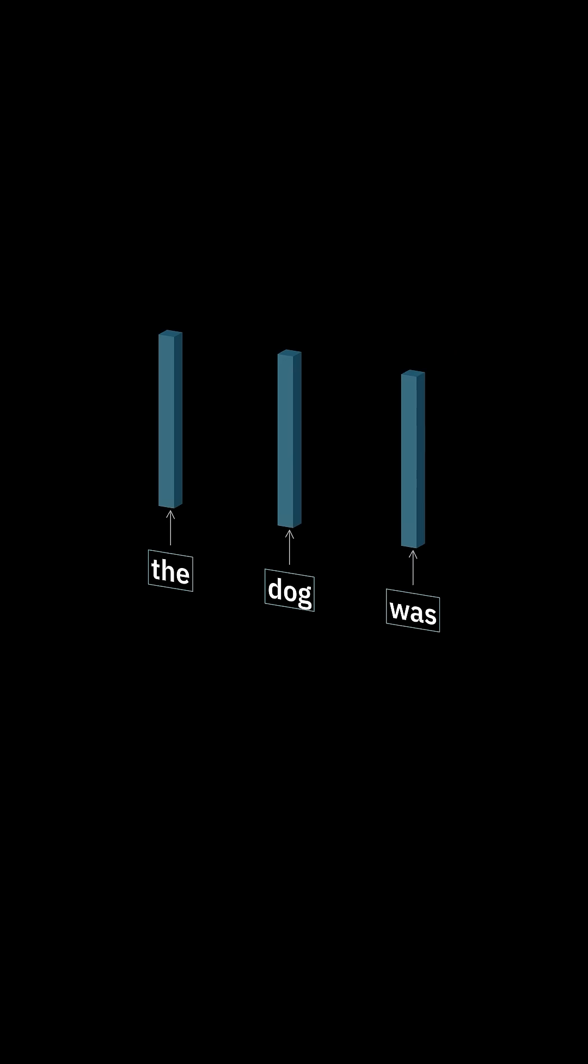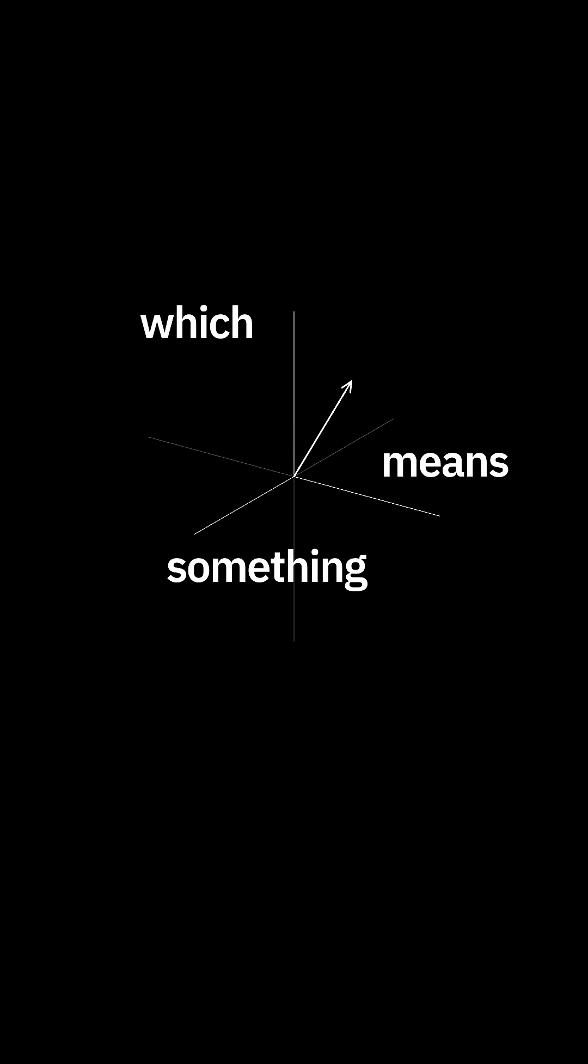Let's break it into tokens. Each token maps to a vector. It points in a direction, which means something. It's called an embedding. This is the embedding of dog. It means dog.